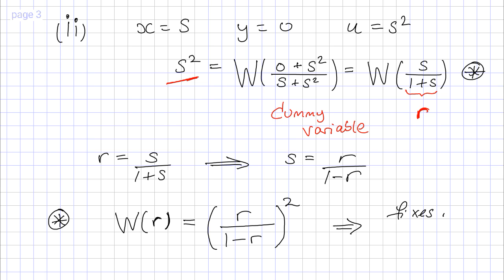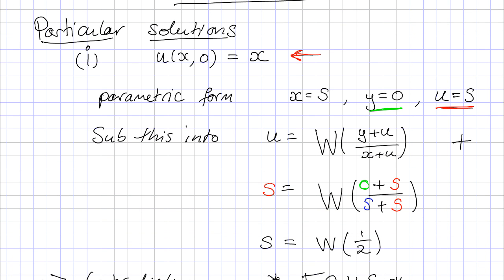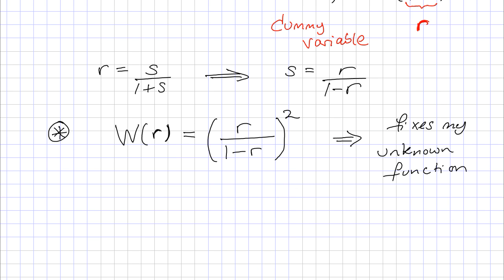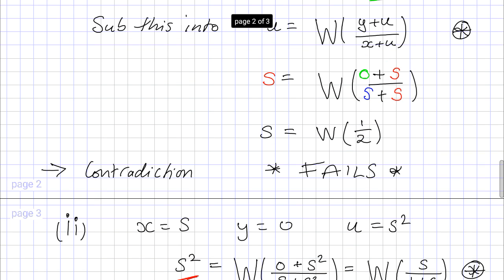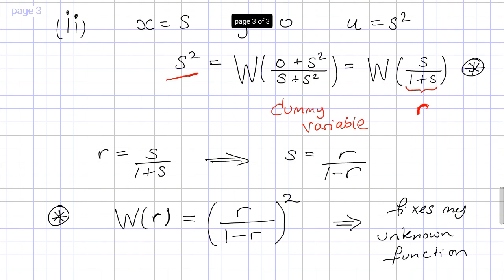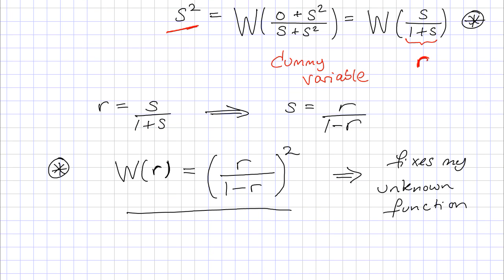Substituting s = r/(1−r) back gives w(r) = (r/(1−r))². This fixes the unknown function explicitly. To write the particular solution, we take the general solution and replace the arbitrary function w with this known one. In summary: in Case 1 we encountered a contradiction so the curve doesn't lie on the solution surface; in Case 2 everything works and we obtain an explicit particular solution whose given curve does lie on the solution surface.